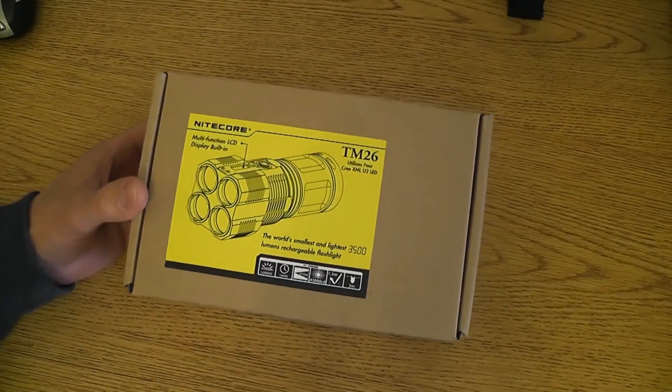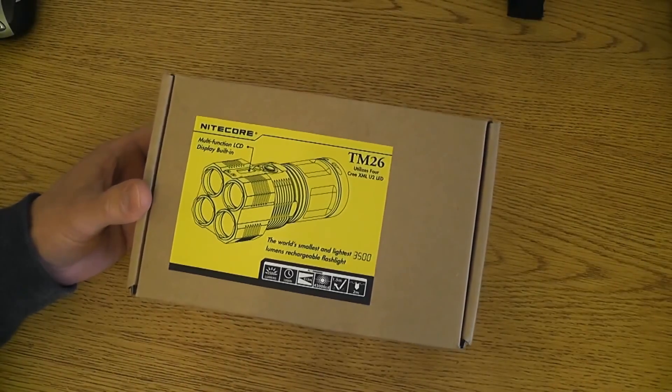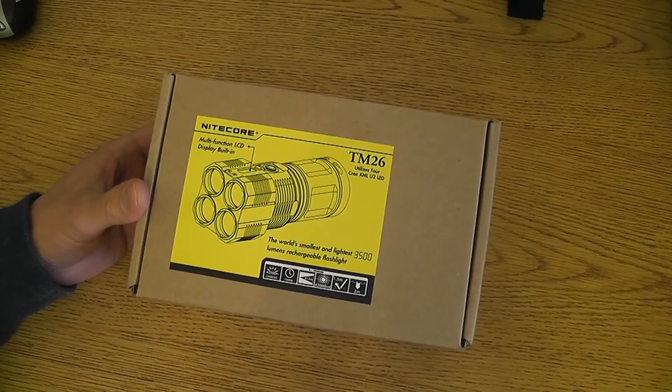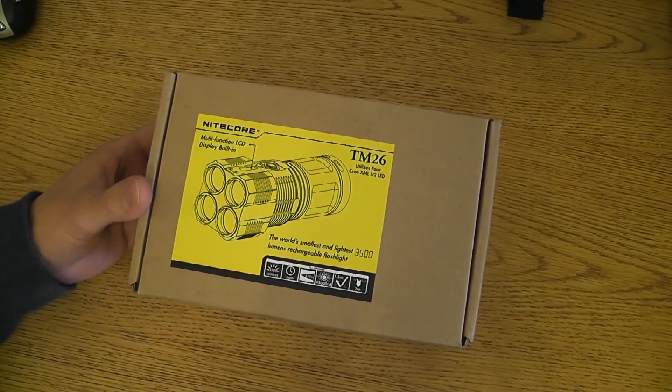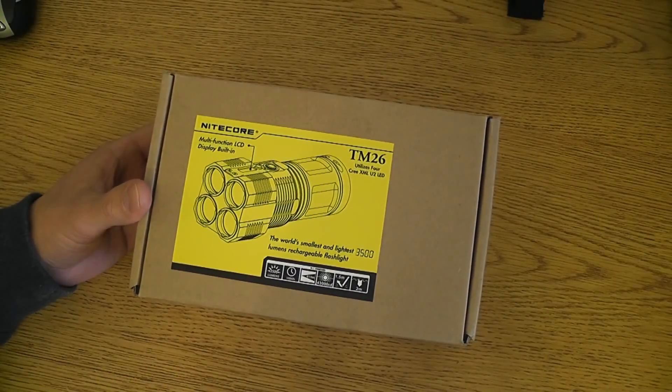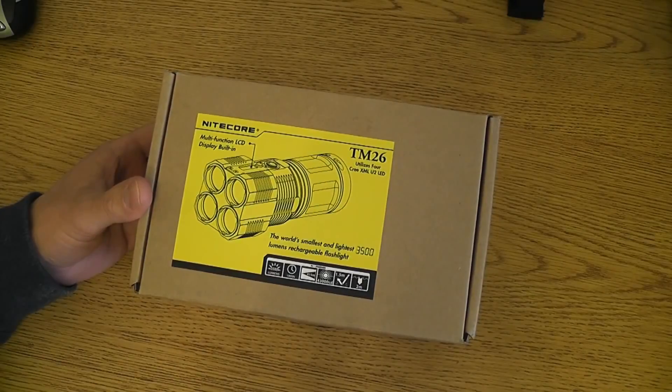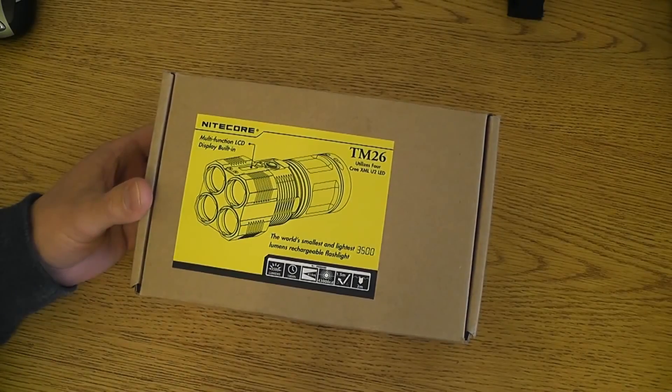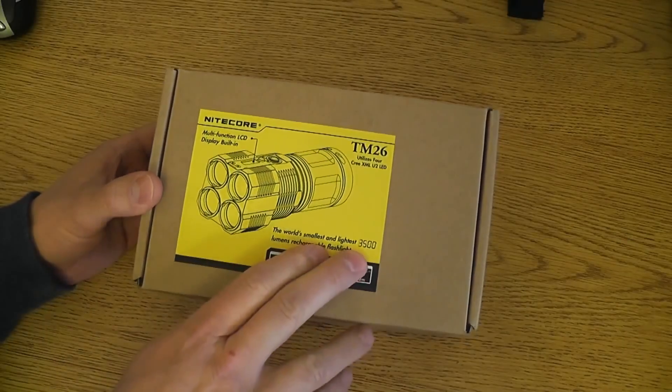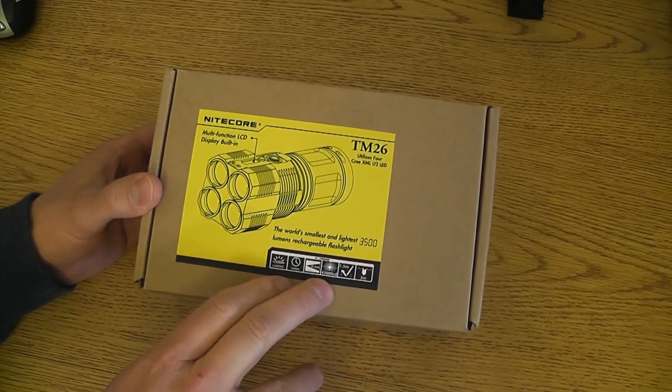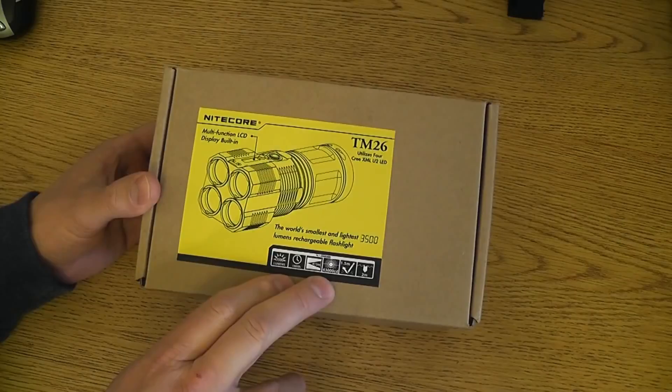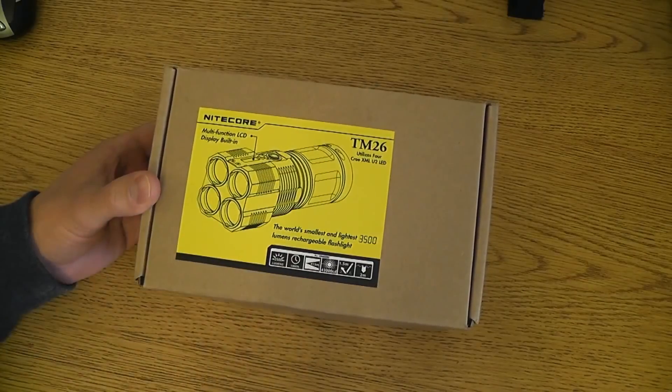Hey guys, Patriot coming to you from the desktop with the Nitecore TM26. This is Nitecore's newest multiple LED light, housing four XML U2 LEDs with peak lumens of 3500 and 43,000 candela. So it's quite a thrower and has quite a bit of output.